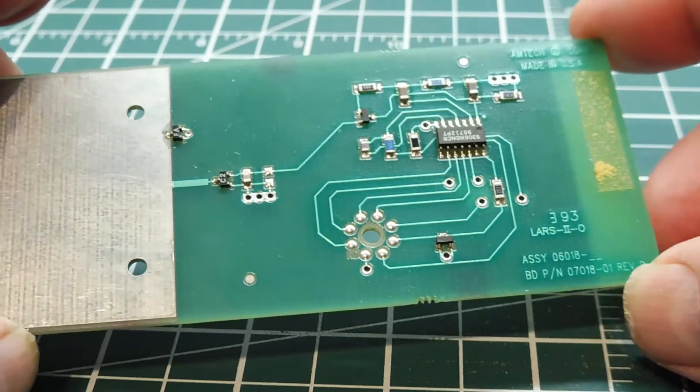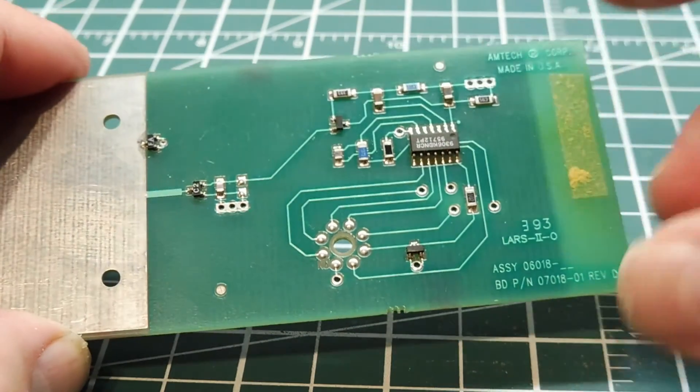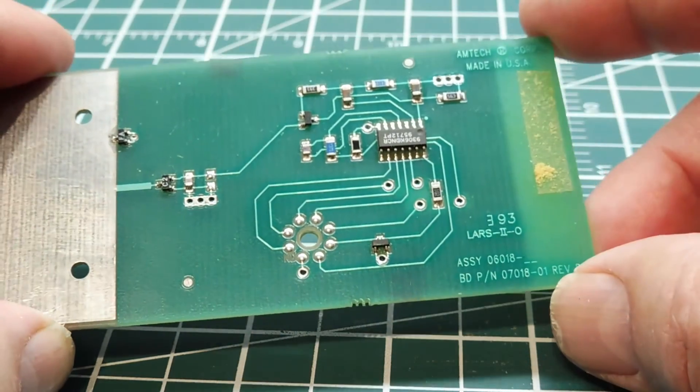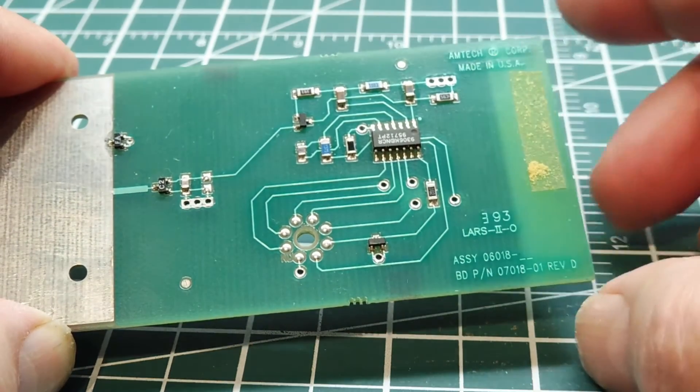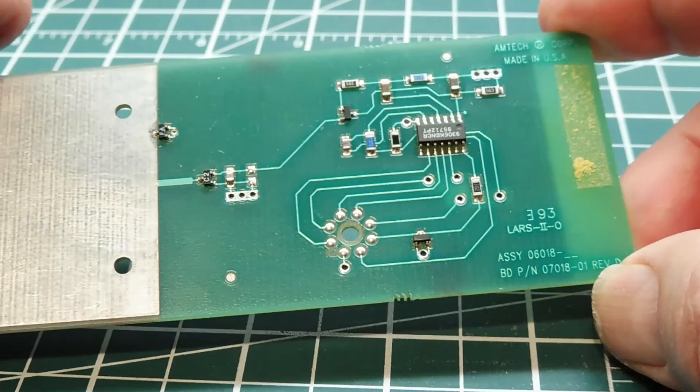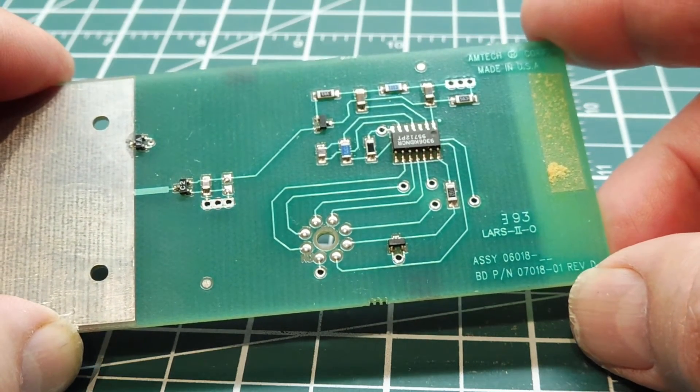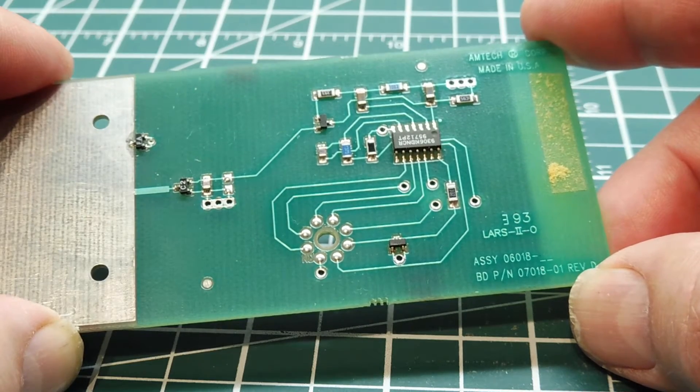So how does this tag work? This tag doesn't have any batteries, it doesn't have a radio on board, but if I put this tag into the RF field of the reader, it would actually extract the data out of this tag. So how does that work? Well it uses a technique called backscatter. Now to understand how backscatter works, we need to go back to basic antenna theory.